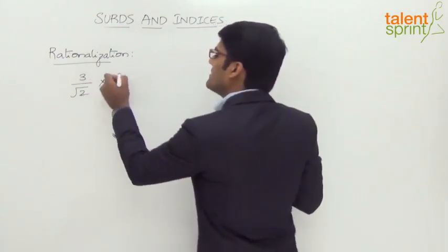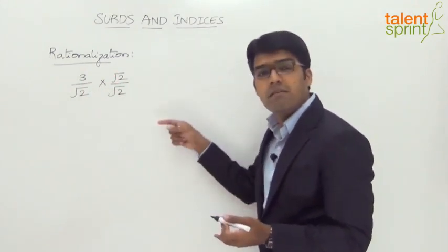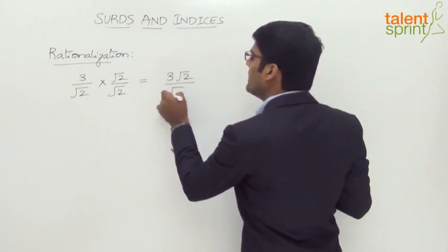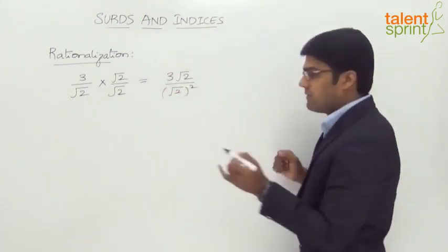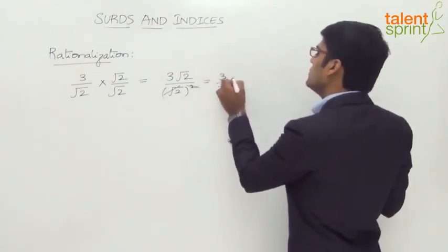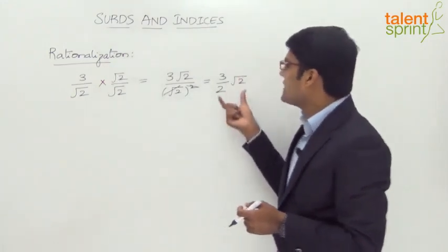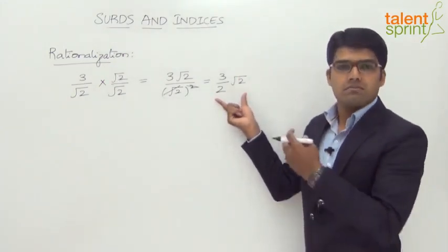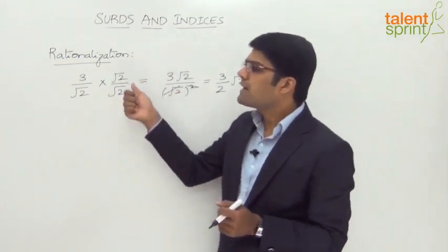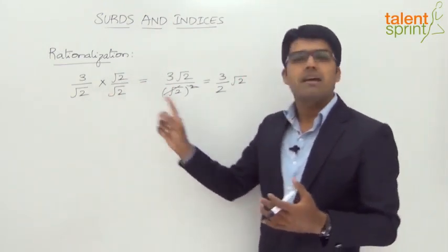So here we rationalize using root 2 in both numerator and denominator. The fraction has not been changed — we are multiplying and dividing by a common value. If you simplify this, it becomes 3 root 2 divided by root 2 the whole square. Root 2 into root 2 is equal to 2, so the value becomes 3 root 2 by 2. The fraction 3 by root 2 has been simplified as 3 root 2 by 2. We multiply both the numerator and denominator with a common term such that the surd in the denominator gets eliminated.